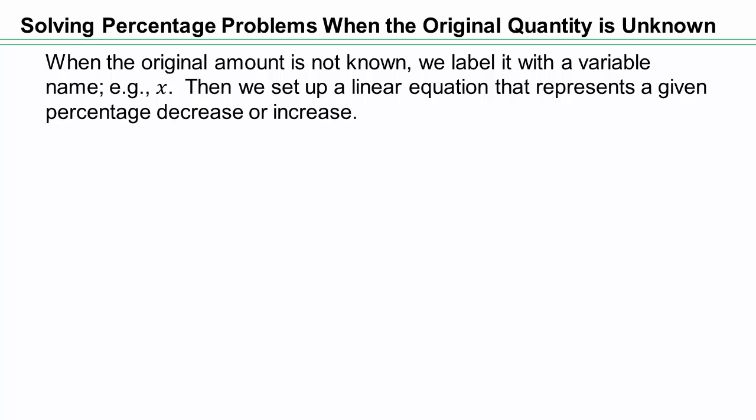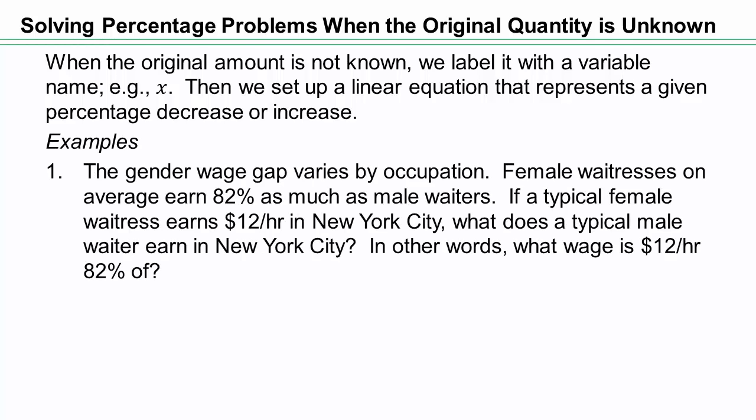Remember, percentage of means multiplication problems. The gender wage gap varies by occupation. Female waitresses, on average, earn 82% as much as male waiters. So if a typical female waitress earns $12 an hour in New York City, what does a typical male waiter earn in New York City? In other words, what wage is $12 per hour, 82% of?